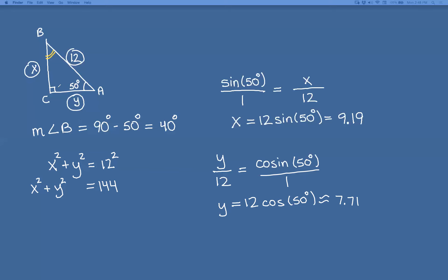We can verify using the Pythagorean theorem: 9.19 squared plus 7.71 squared should be close to 12 squared, which is 144. And indeed, 9.19² + 7.71² gives approximately 143.9, which is very close to 144. That's a good way to check your work.